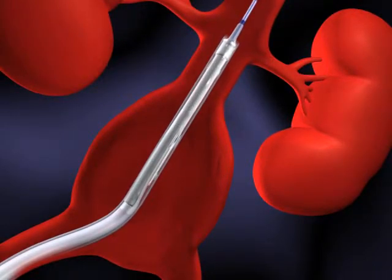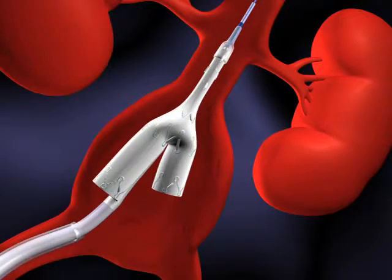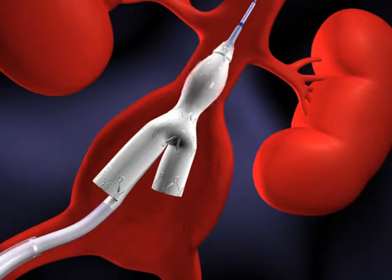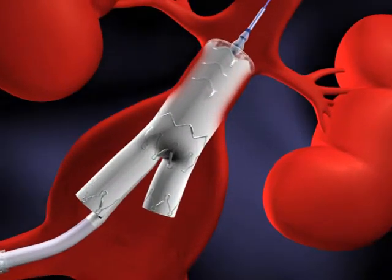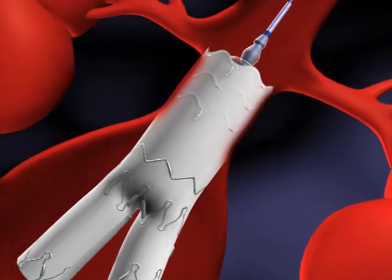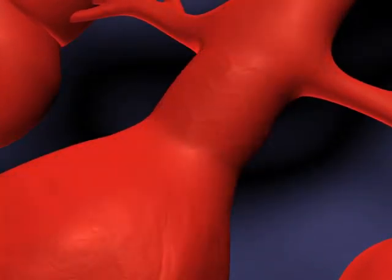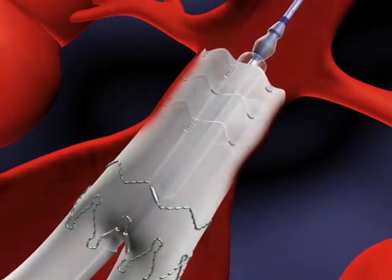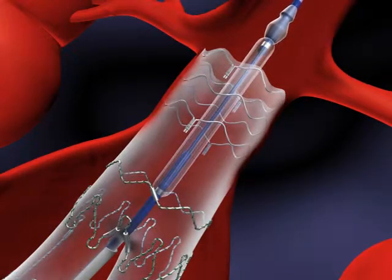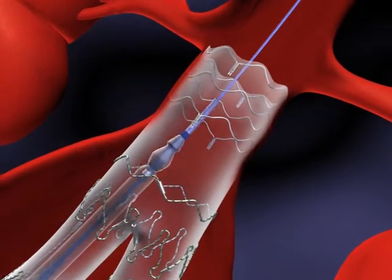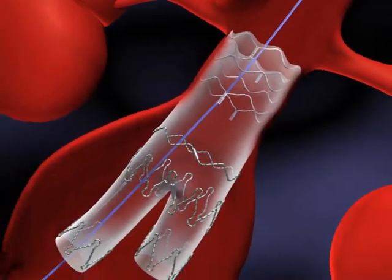Pulling the sheath back exposes the bifurcated graft, allowing it to be positioned for implantation. The balloon is then inflated to two atmospheres for 30 seconds, deflated, and the step repeated. After final deflation, the balloon is stretched to reduce its profile and the delivery catheter withdrawn.